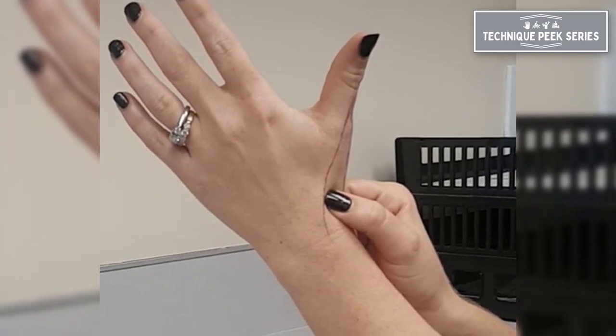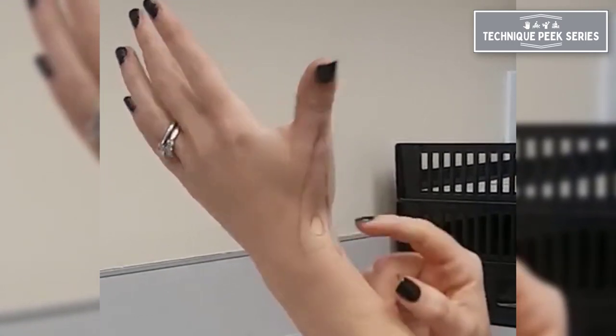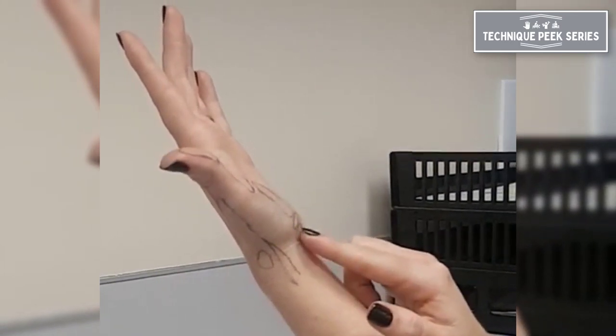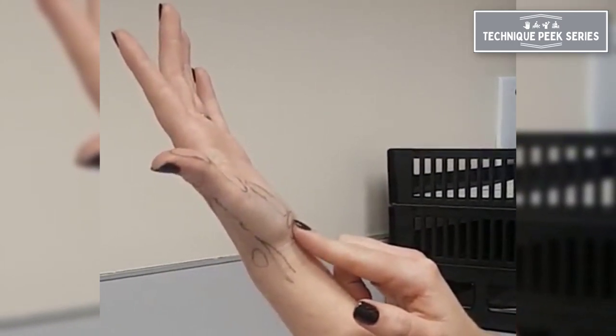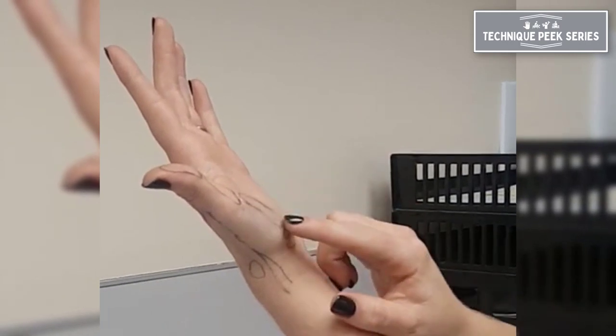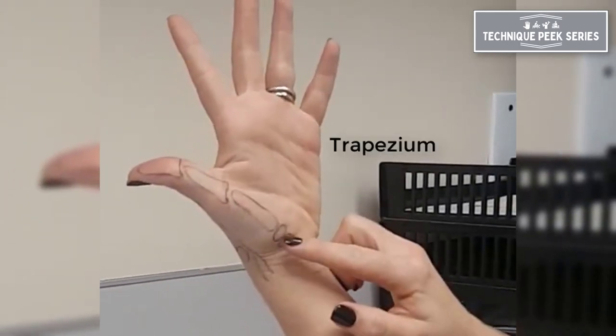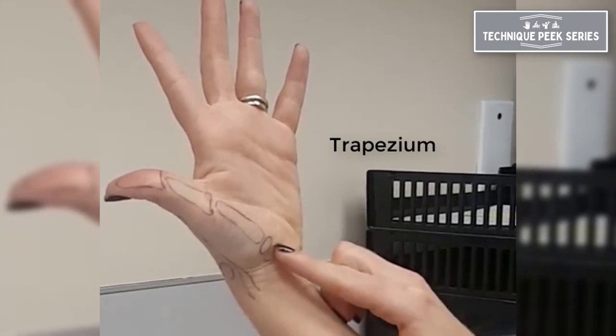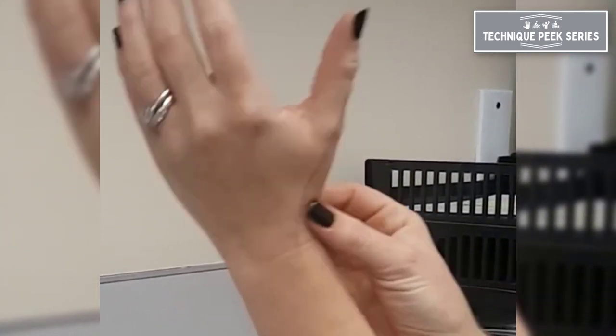We're going to place our thumb right over that edge right there. Then on the volar side, we're going to take our index finger. We're going to place our finger right over the scaphoid on the volar section, indicated right underneath the CMC, the trapezium, and then the scaphoid you can find right under there.